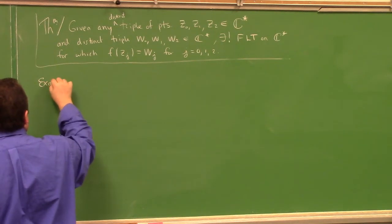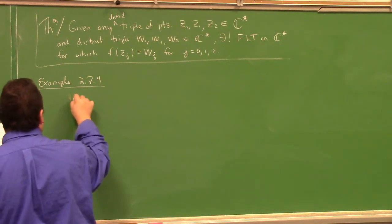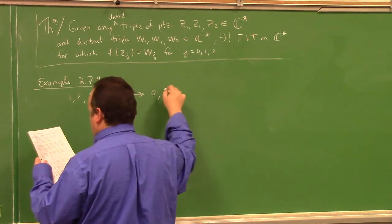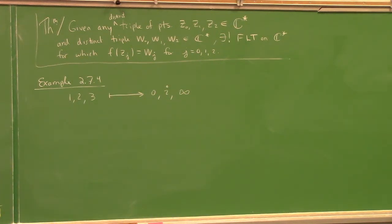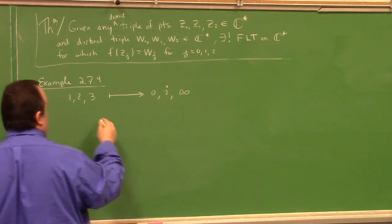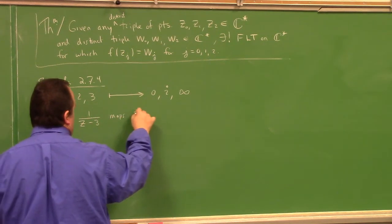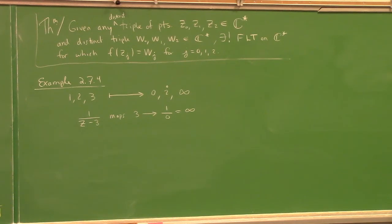I'm not going to prove this theorem, but I'll illustrate it with example 2.7.4. I want to find a Möbius transformation that maps 1, 2, 3 to 0, i, and ∞ respectively. To get ∞, I use 1/(z − 3), since that maps 3 to 1/0 = ∞. And if I put z − 1 upstairs — so (z − 1)/(z − 3) — that also maps 1 to 0.